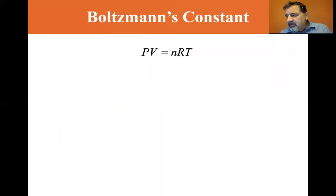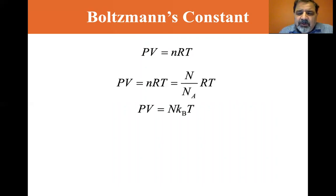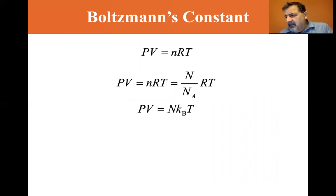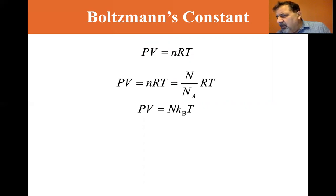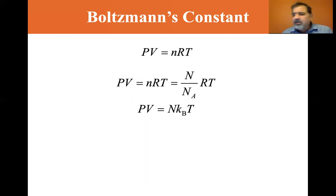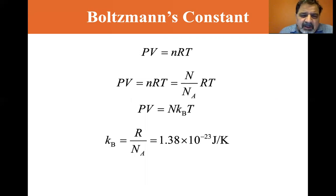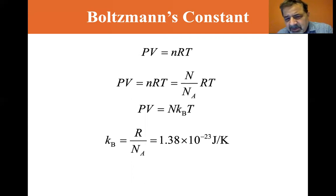So we have PV equals NRT, but we can also express this using the total number of molecules. If N is the total number of molecules divided by Avogadro's number NA, we use Boltzmann's constant kB, where kB equals the universal gas constant R divided by Avogadro's number, giving 1.38 times 10 to the minus 23 joules per Kelvin.